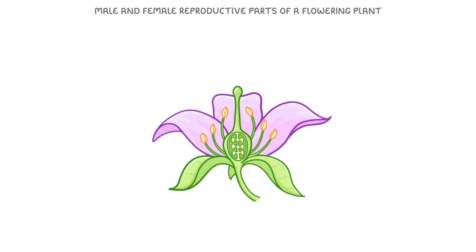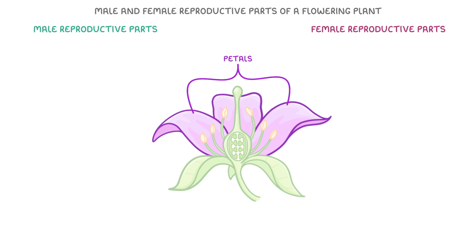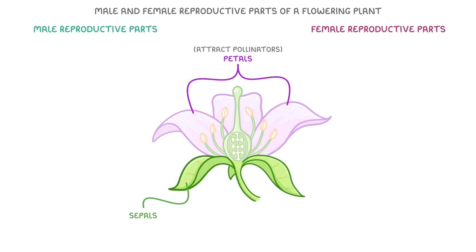Let's start by covering the male and female reproductive parts of a flowering plant. Most flowers have both male and female reproductive parts. These male and female structures are enclosed within modified leaves called petals, which are sometimes brightly coloured or scented in order to help attract pollinators. When the flower is still in bud, the petals are enclosed by modified green leaves called sepals, whose job is to help protect the inner structures of the bud — all the reproductive parts and the petals too.